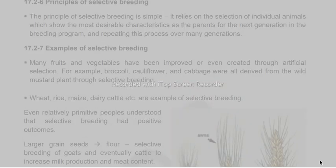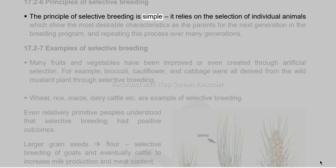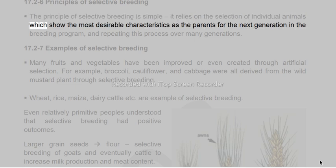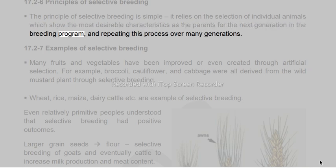The principle of selective breeding is simple: it relies on the selection of individual animals which show the most desirable characteristics as the parents for the next generation in the breeding program, and repeating this process over many generations.